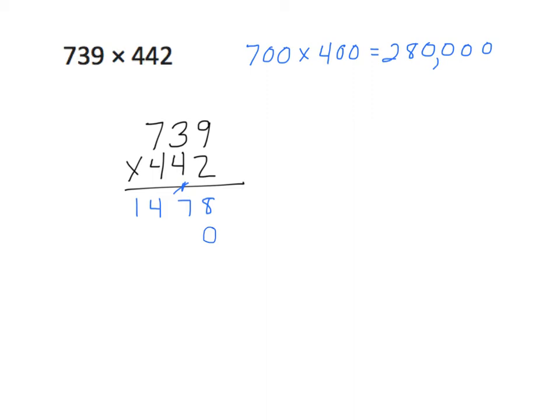I now have 4 times 9 — 4 tens times 9 ones — and I get 36, so we're going to regroup that 3. We're going to multiply 4 times 3, that's 12, plus 3 is 15. Regroup our 1. And 4 times 7 is 28, plus 1 is 29. We need to go one more place because our factor on the bottom has three non-zero digits, so we're going to have three partial products.